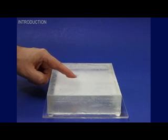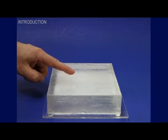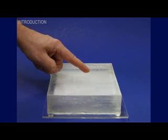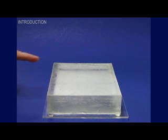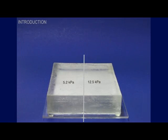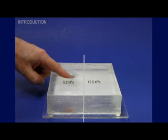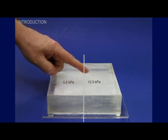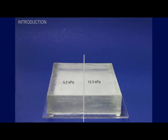When the human finger palpates soft tissue, the brain tries to estimate the pressure response versus the finger motion. Let's take a look at this tissue model. It contains two separate regions that have distinct elasticities. While different tissue characteristics may be detectable with side-by-side palpation, the human finger cannot distinguish these two regions in the model if they're separated in time or space. The brain cannot remember the finer aspects of tissue elasticity reliably.